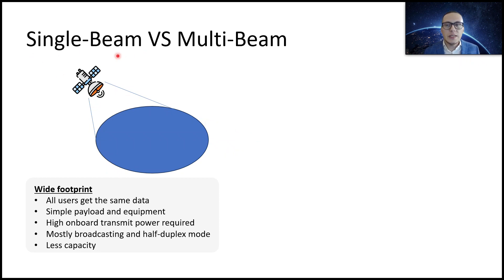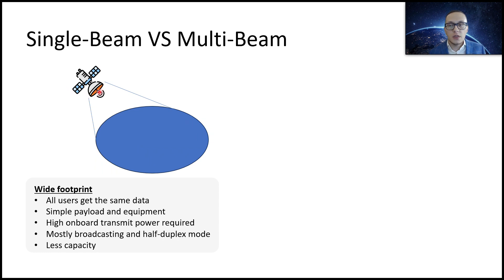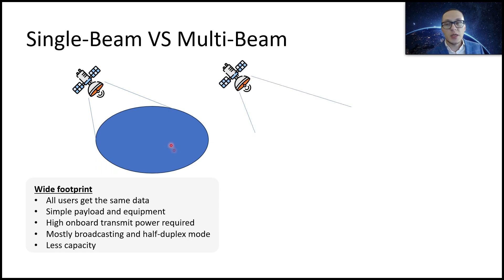Now let's talk about single beam versus multi-beam operation. For single beam operation, it is still relevant and possible. In this case, all users get the same data — it's about simple payload and simple equipment, requiring high onboard transmit power. It is mostly used for broadcasting and half-duplex mode. The main negative factor here is less capacity: one cell, one beam, one frequency, one code division — so that system has less capacity compared to multi-beam.